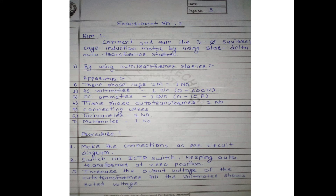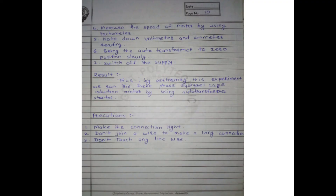Procedure: first, make connections as per the circuit diagram. Second, switch on the ICTP switch keeping the auto-transformer at zero position. Third, increase the output voltage of the auto-transformer until the voltmeter shows rated voltage. Fourth, measure the speed of the motor using a tachometer. Fifth, note down voltmeter and ammeter readings. Sixth, bring the auto-transformer to zero position slowly. Seventh, switch off the supply.